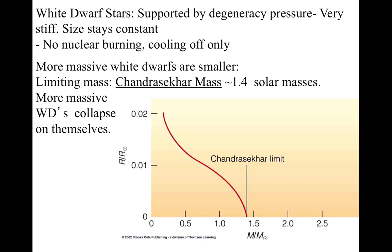The interesting thing is, because the way degeneracy pressure works, the more massive a white dwarf is, the smaller it is, and it turns out that there's a limiting mass, called the Chandrasekhar mass, which is about 1.4 times the mass of the sun. Objects that are more massive than that will collapse on themselves. They can't support themselves, even with degeneracy pressure.